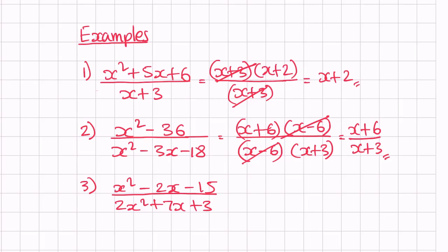Example number three — we can see a quadratic expression with a coefficient. If you haven't watched the factorizing quadratics with coefficients video, please do check it out. Let's factorize the top part first: that gives us x minus 5 and x plus 3. Double check: minus 5 plus 3 is minus 2 for the sum, and minus 5 times plus 3 is minus 15 for the product.